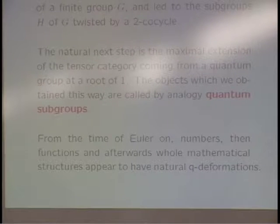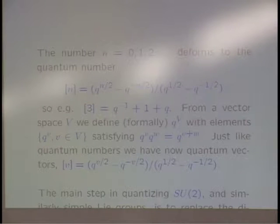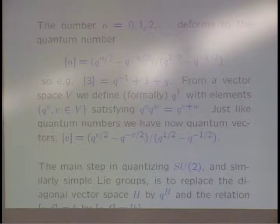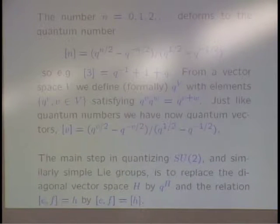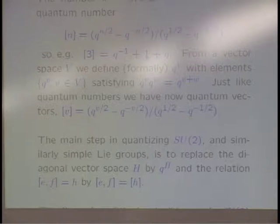In this talk I'll try to discuss some possible directions for breaking this dimension barrier. The Q-deformations have appeared from Euler's time, who noticed that you can replace numbers by Q-numbers — a very classical concept. You deform the natural number n to the quantum number given by an expression familiar to everybody here. For instance, the quantum number 3 is Q-inverse plus 1 plus Q, where Q is a parameter. Formally, you can replace n by a vector, getting Q to the power V, which transforms additivity into multiplicativity.